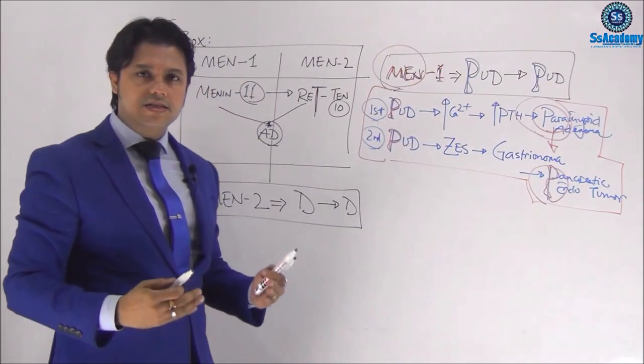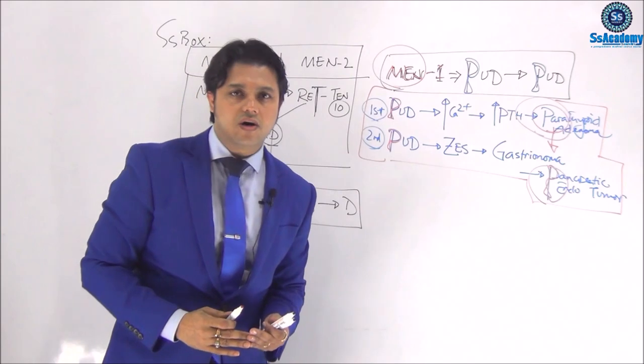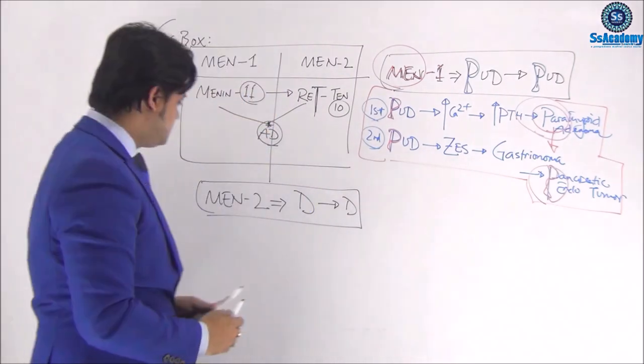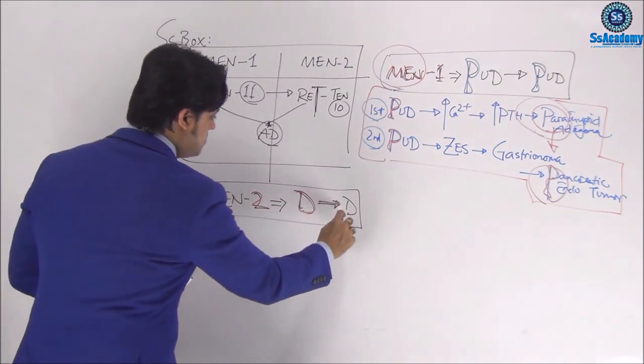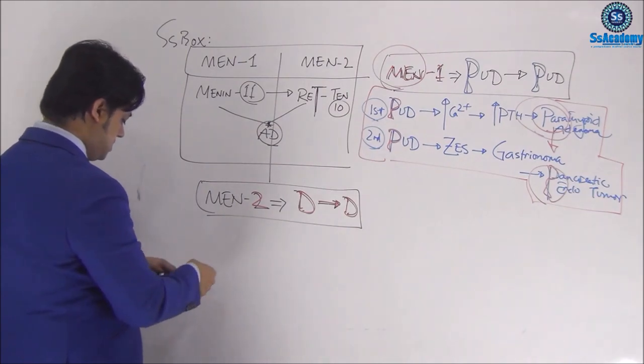So this is the first and second step presentation that we call MEN type 1. So as I say, the MEN-1 is nothing but putie followed by putie. Second talk, the MEN type 2 is diarrhea followed by diarrhea.